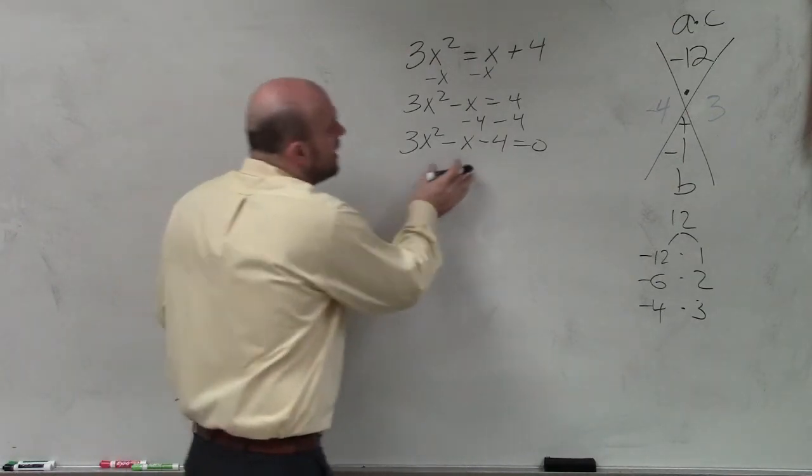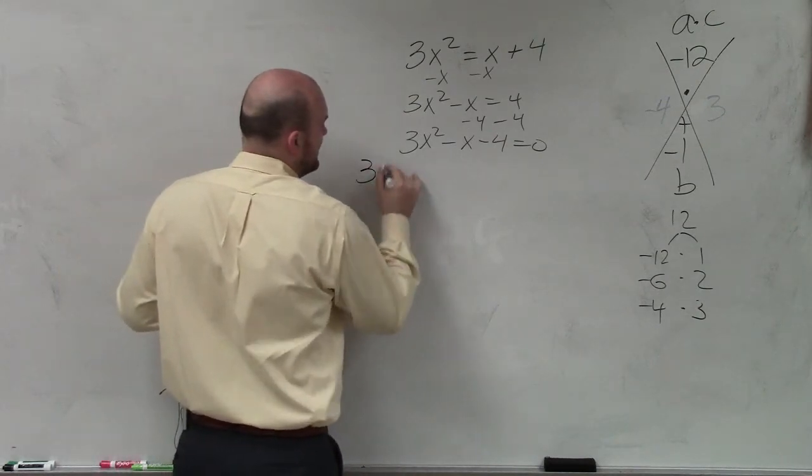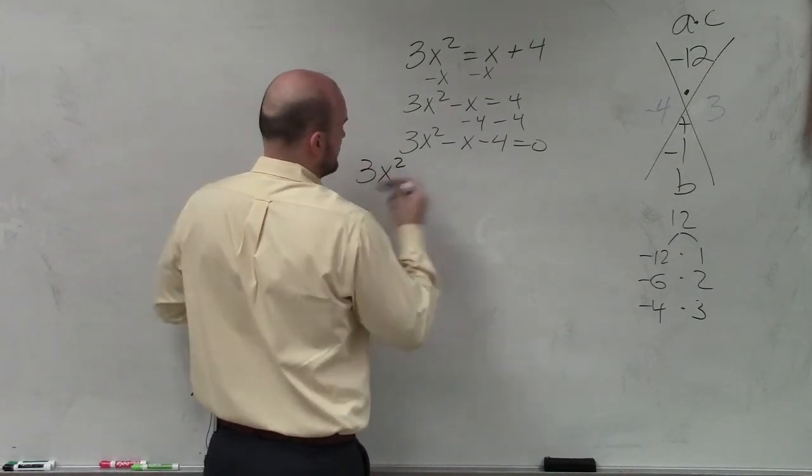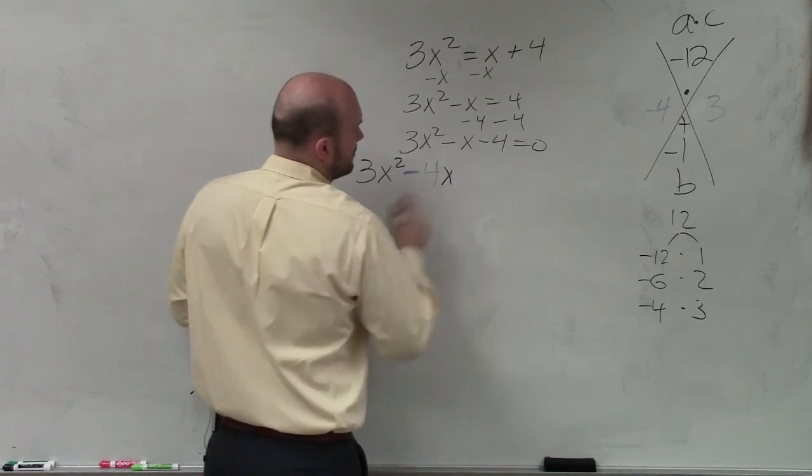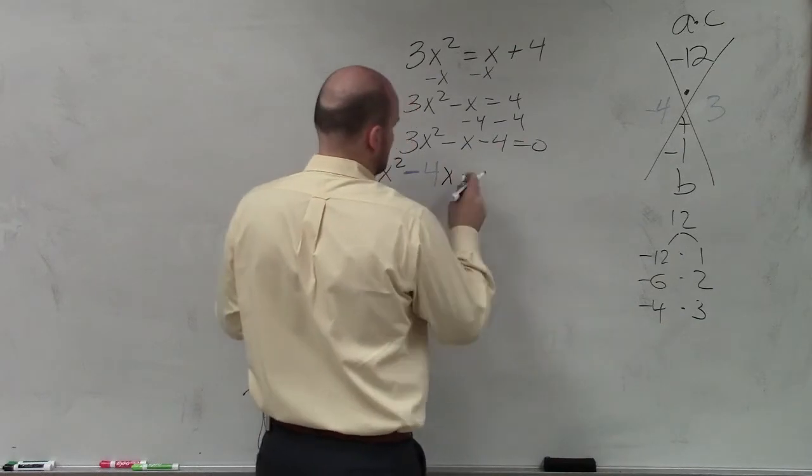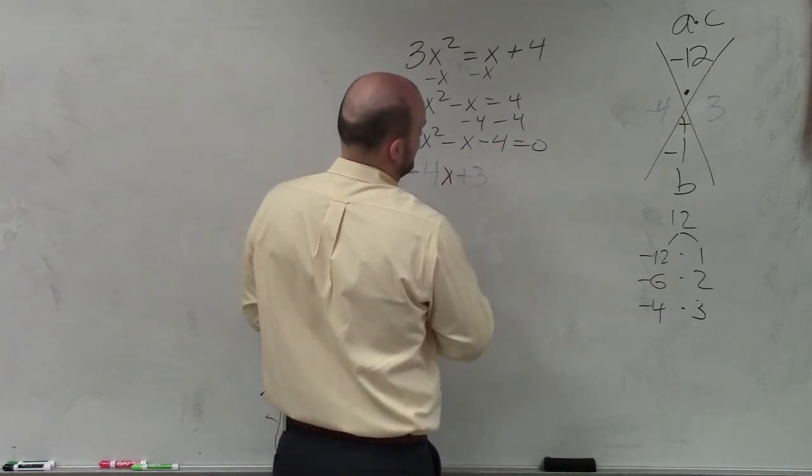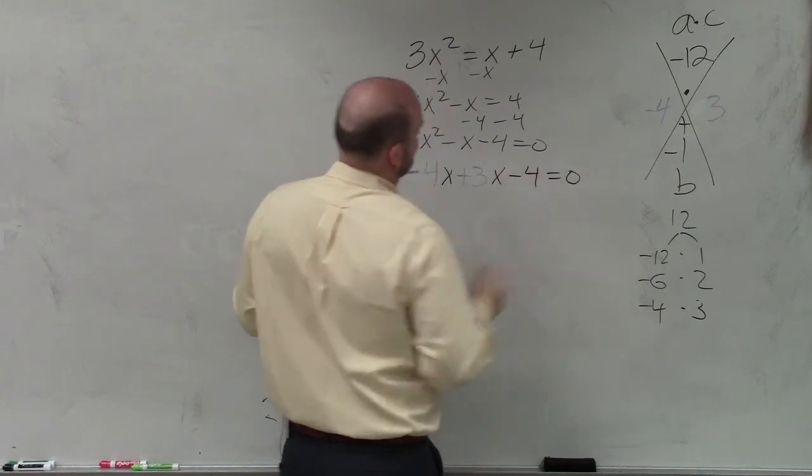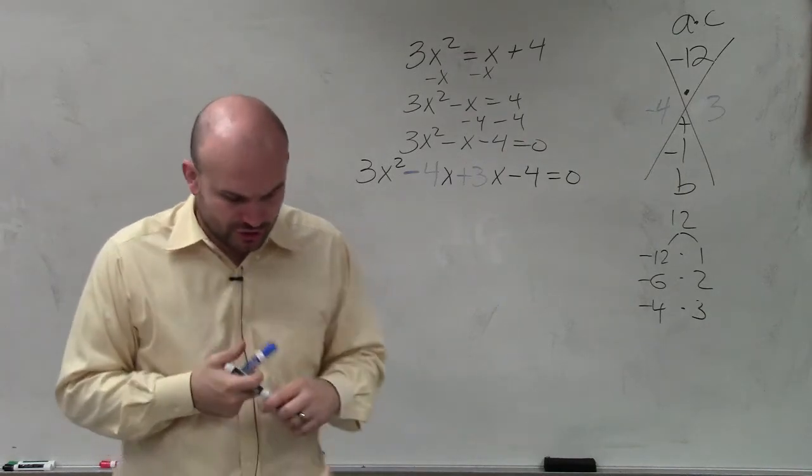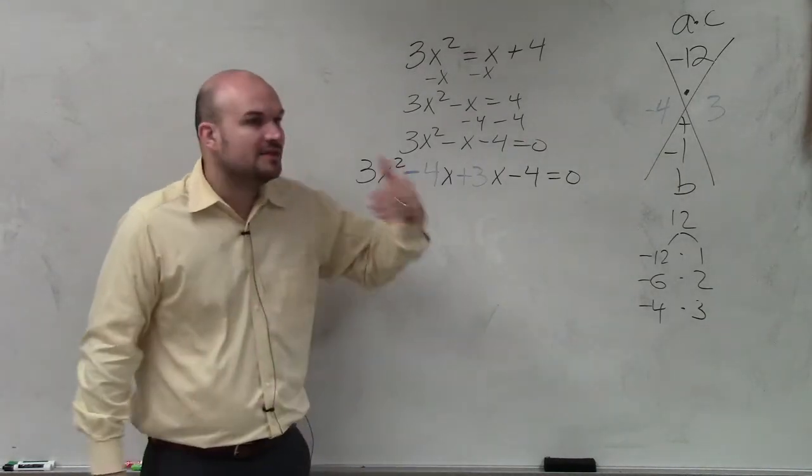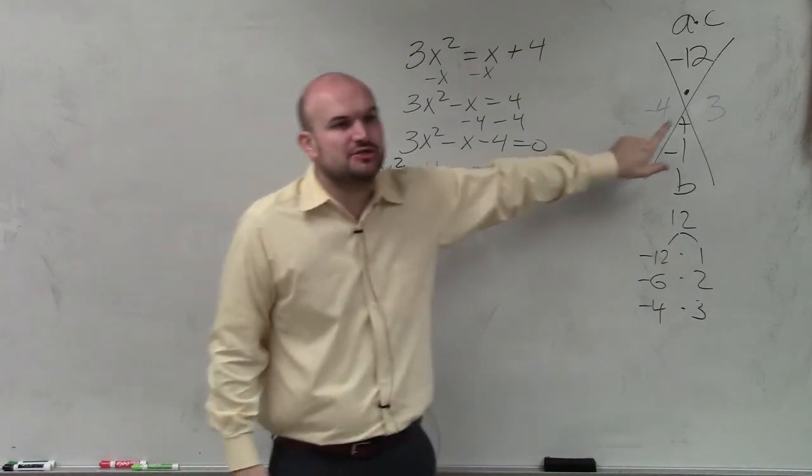So now, what I'm basically going to do is I'm going to rewrite this, 3x squared. OK. You broke the middle term B. Now, unlike the last problem, ladies and gentlemen, we cannot use these as our two factors.